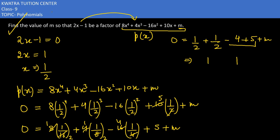Half plus half equals 1, so 1 plus 1 plus m equals 0. 1 plus 1 is 2. Take 2 to the left side; it becomes minus 2. Therefore, m equals minus 2.